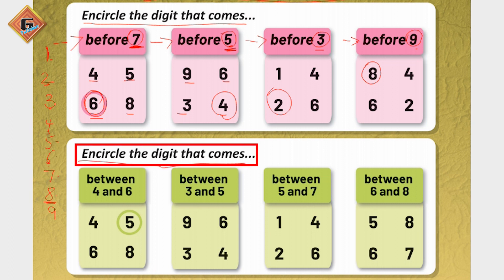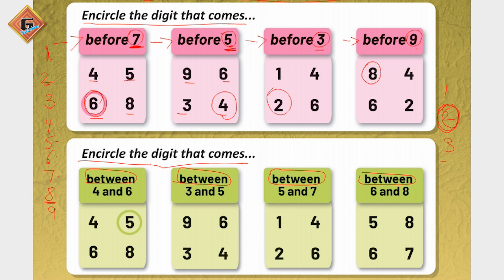Now we are going to encircle the digit that comes between. We have to see what comes in between — dhermiyan mein kya aata hai. For example, if we have one and three, we need to find what comes between them. We will use counting to find it — between one and three comes number two.